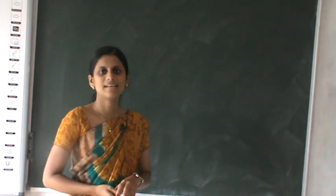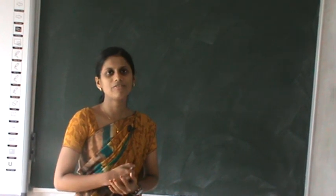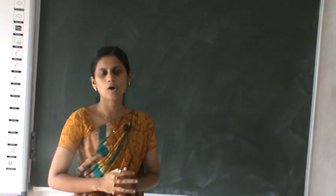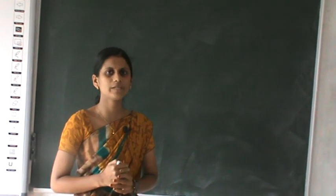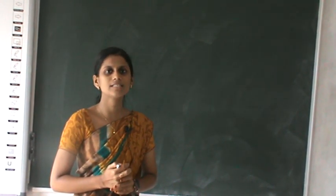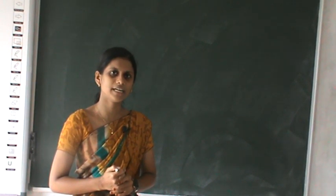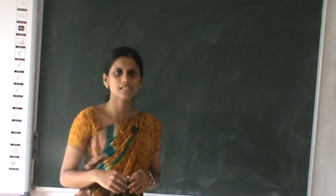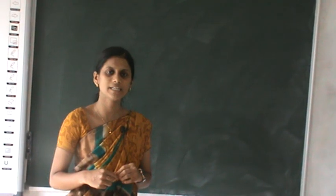Good morning students. In the last class we discussed about fertility — the meaning of fertility as well as measures of fertility. I would like to recall what are the measures of fertility. As I told you, there are four measures: the first one is crude birth rate, next is general fertility rate, thirdly is specific fertility rate, and the fourth one is total fertility rate. In this session we are going to discuss in detail what are the measures of fertility.